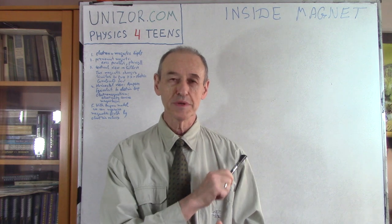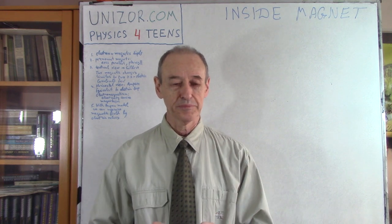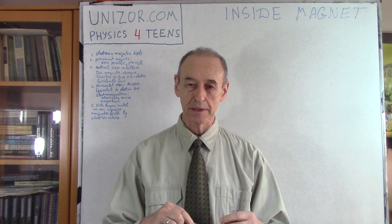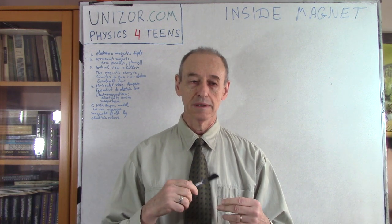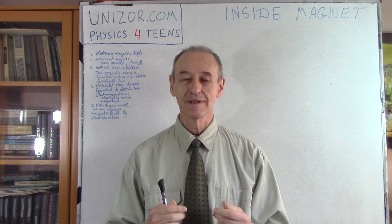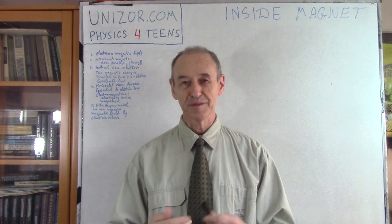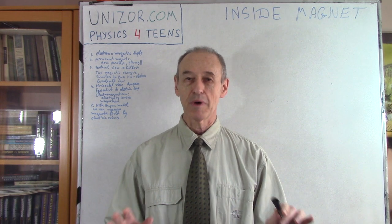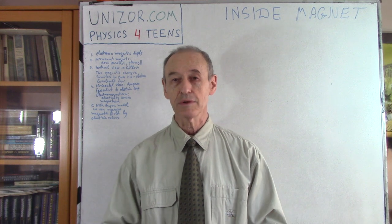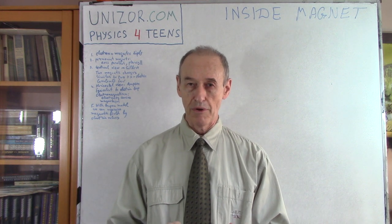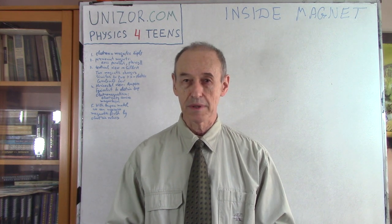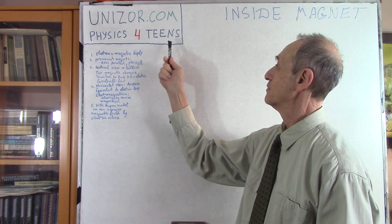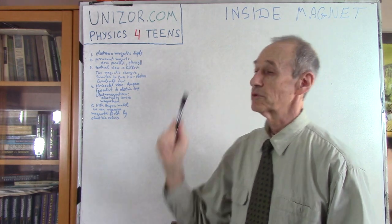I will probably repeat the most important part today. Today I would like to get inside the permanent magnet and try to reason why it behaves like it behaves. It's a model — everything is a model — however, it kind of corresponds to whatever people observe in their experiments with real magnets. This lecture is part of the course Physics for Teens, presented on unizor.com.